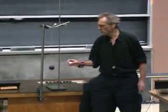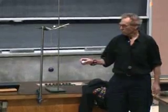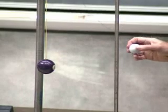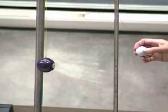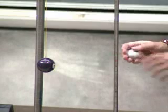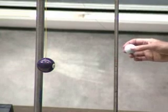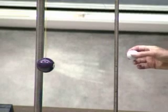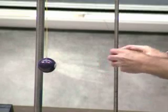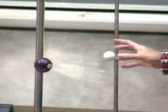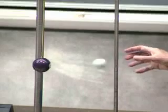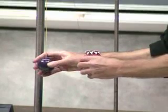First I will bounce the ping-pong ball off the billiard ball — the ping-pong ball comes back almost with the same speed, not quite because the ratio is 500 to one, not infinity, and the billiard ball will do practically nothing. That's exactly case two. The ping-pong ball comes back almost as far as I let it go, and the billiard ball almost does nothing.